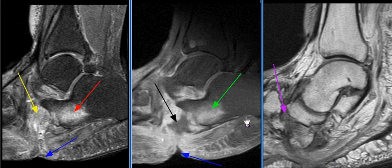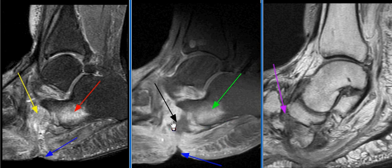A 50-year-old diabetic male with history of foot ulcer. MRI examination of the ankle is performed. There is cancellous edema seen in the calcaneus with post-contrast enhancement and probable cortical destruction laterally, consistent with osteomyelitis.